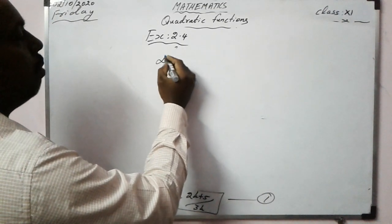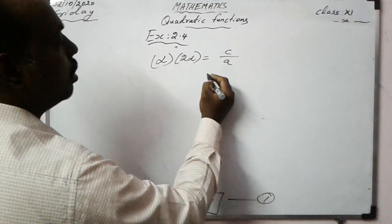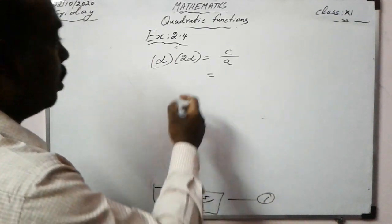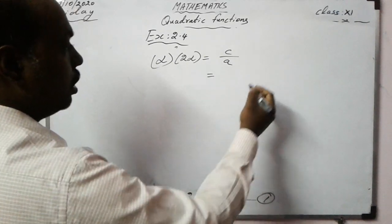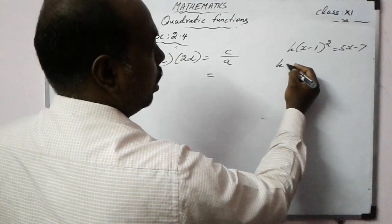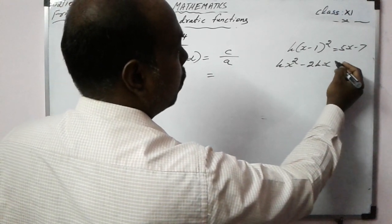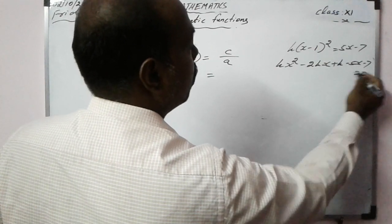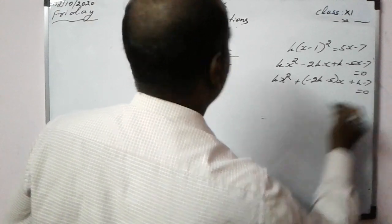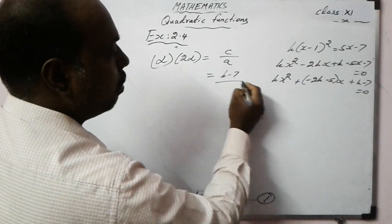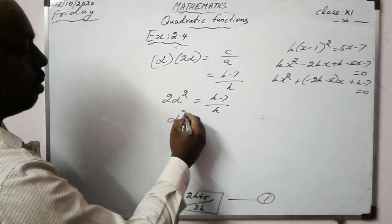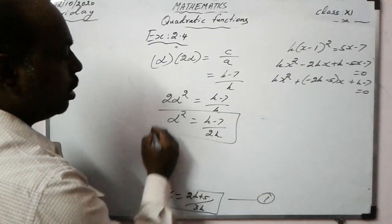Product of roots: alpha × 2·alpha = c/a, so 2·alpha² = (k+7)/k, giving alpha² = (k+7)/(2k). Call this equation 2.